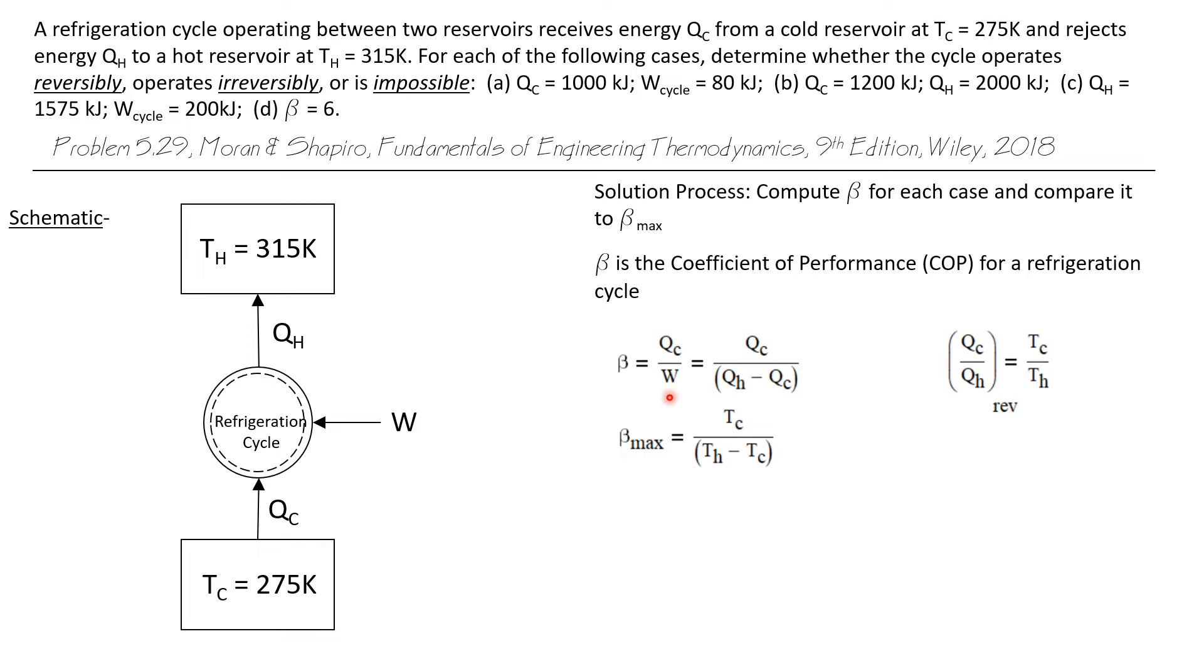An energy balance yields the same result for a refrigeration cycle as it does for a power cycle: work equals QH minus QC. So we end up with beta equals QC over QH minus QC. For a reversible cycle only, we can say that QH over QC equals TC over TH. Since we're trying to find beta max, we can substitute TC and TH for QC and QH, and we get beta max equals TC divided by TH minus TC.